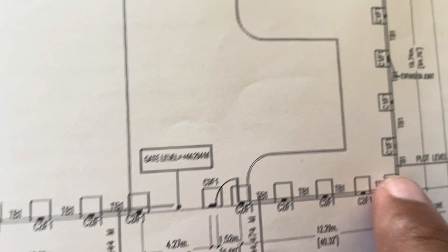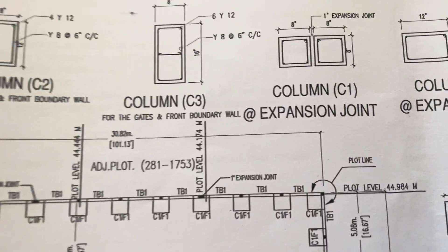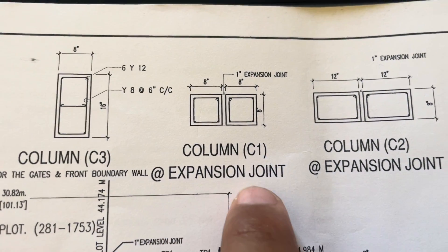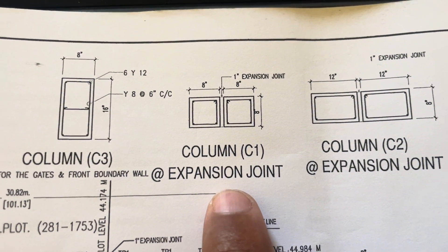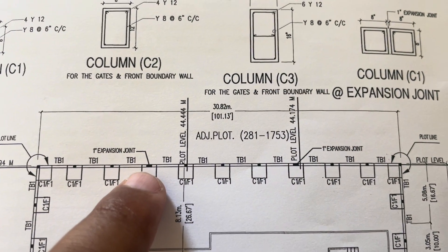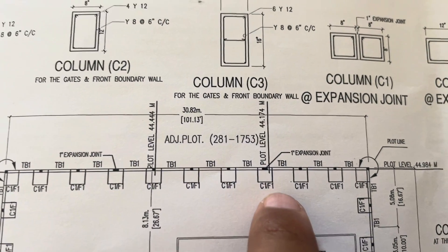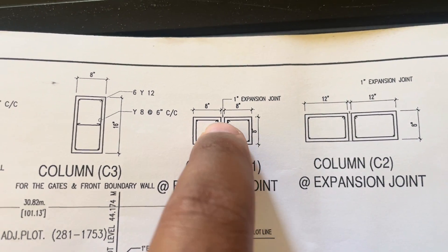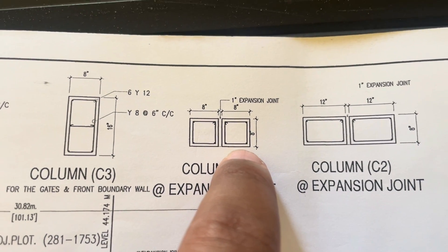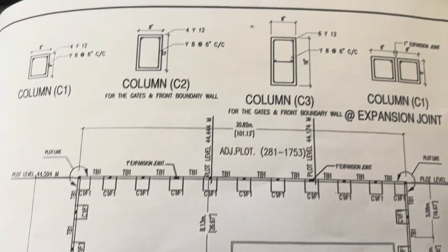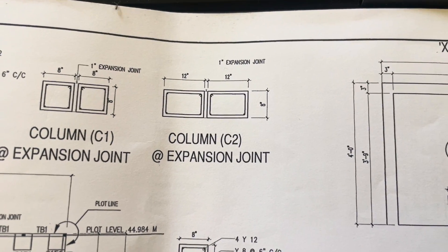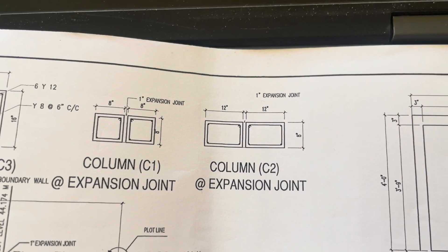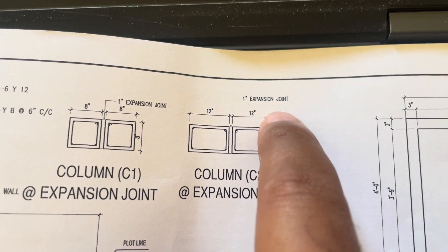Column C1 is also used at expansion joints — we have expansion joints here, one inch wide. For C1 at expansion joints, the 8 by 8 inch column detail applies with a 1 inch gap for expansion. Column C2 is similarly used at the front expansion joint locations, where a 1 inch expansion joint gap is also provided.